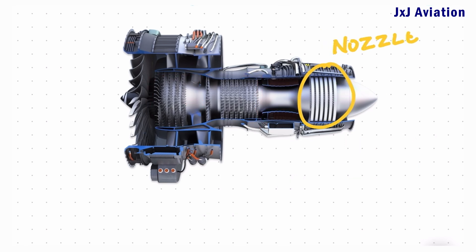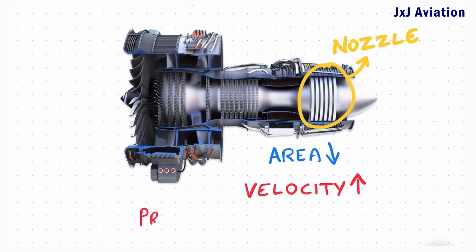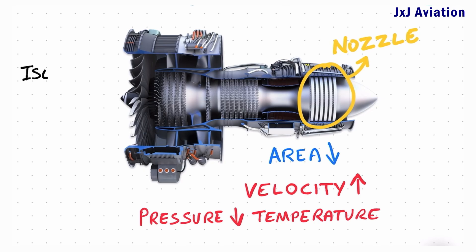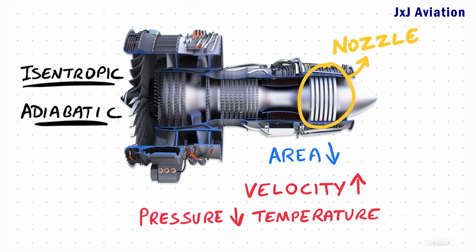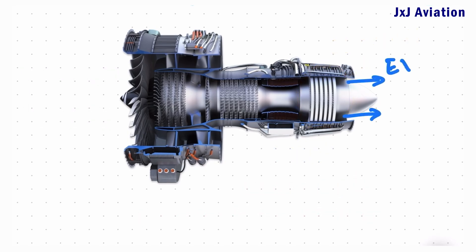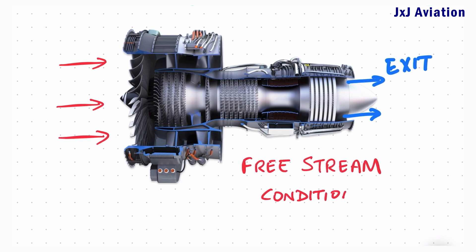The gases then flow through the nozzle. The nozzle's cross-sectional area decreases as we go downstream. This results in an increase in velocity and a decrease in pressure and temperature. This is also an isentropic and an adiabatic process. On an ideal gas turbine engine, the air at the engine exit should return to its initial free stream conditions. This completes the cycle.